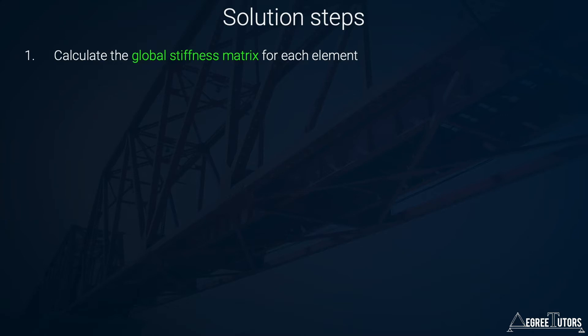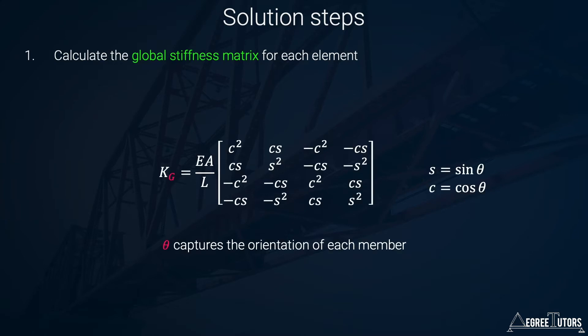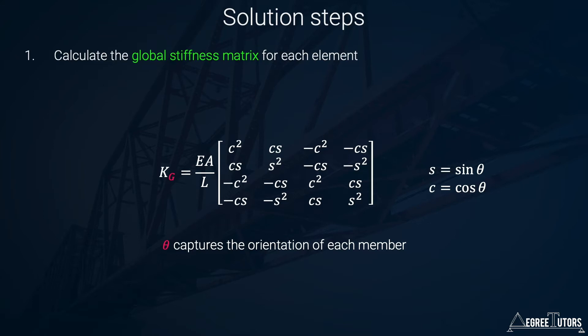The first step is to calculate the global stiffness matrix for each element. We've seen and derived this matrix before — it's the global stiffness matrix for an element transferred into the global coordinate system. We start with the four-by-four element stiffness matrix and use a transformation matrix to convert it into the global coordinate system, which captures the orientation of each member.